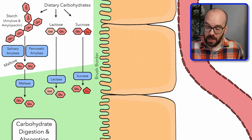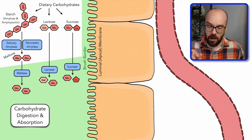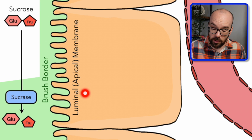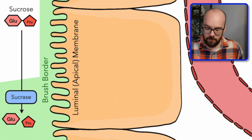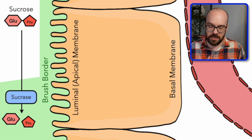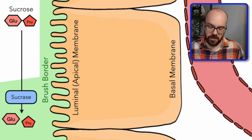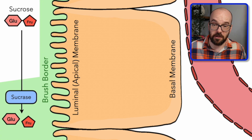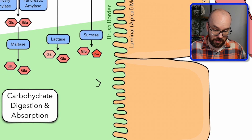Now we have lots of monosaccharides and we're ready to begin the absorption process. Before we do, I want to label a couple of things on our enterocytes. First, we have what we call the luminal or apical membrane — that's where we'll be bringing molecules into the enterocyte. Then we have the basal membrane, the back or inside part of the enterocyte. We've got to get the monosaccharides out through the basal membrane so they can enter the capillary.